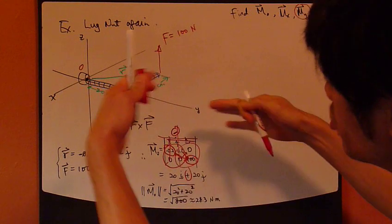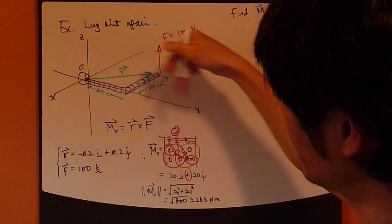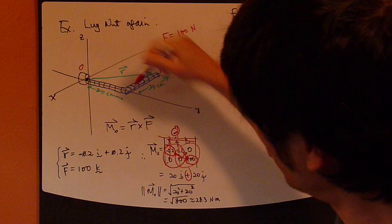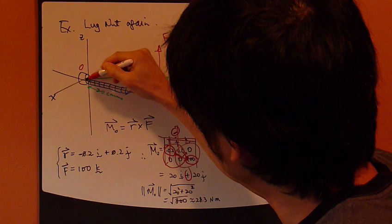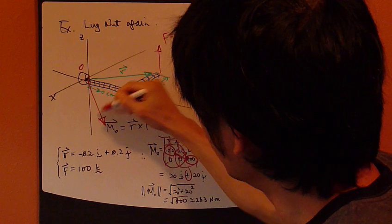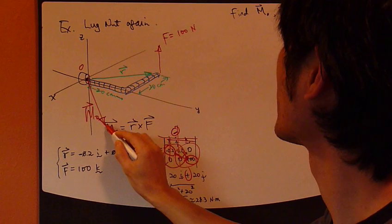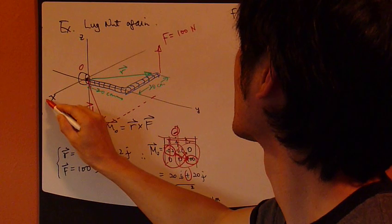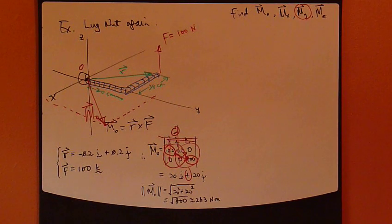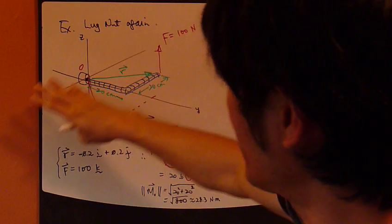So, I'm going to superimpose this moment onto x and y axis. Alright? So, let's say 20, I'm going to define that. Maybe this length. Alright? And then here. So, something like this. Okay? So, this is my M_O. Okay? About point O. Okay? So, this M_O is on this xy plane.